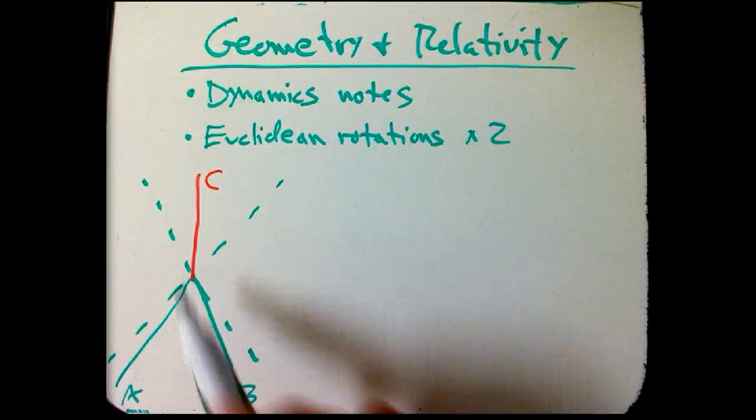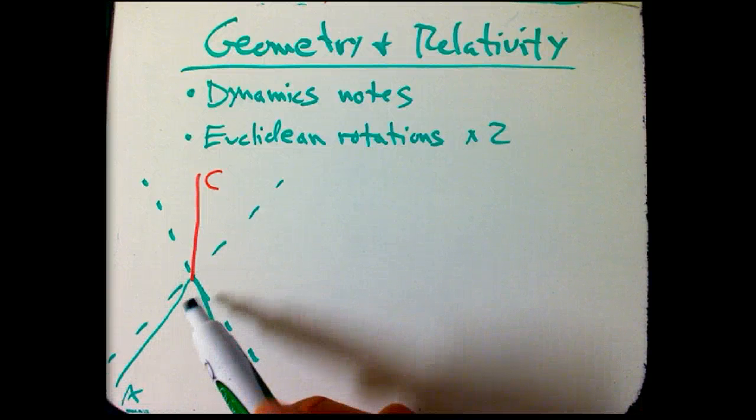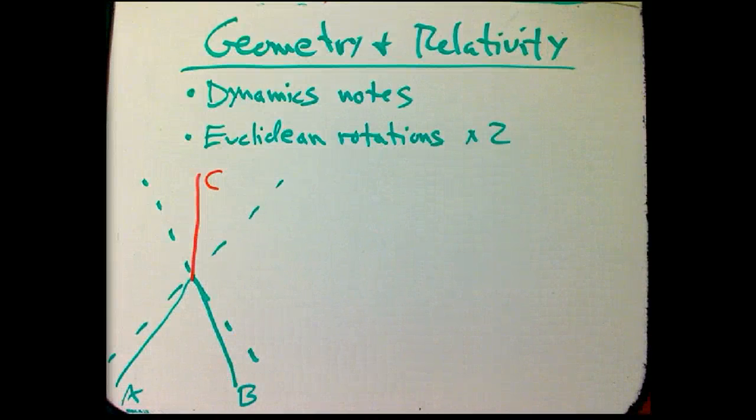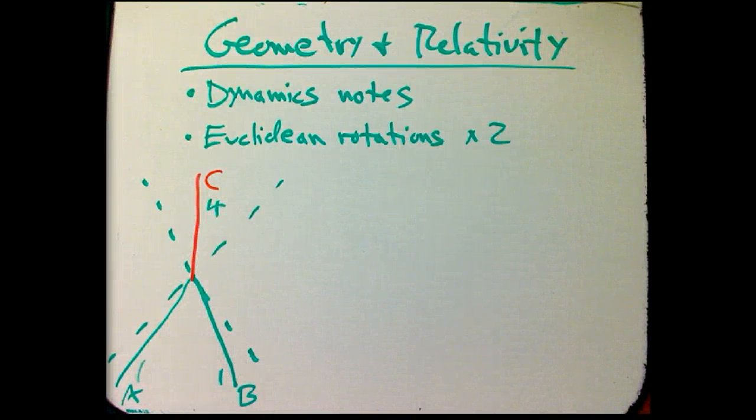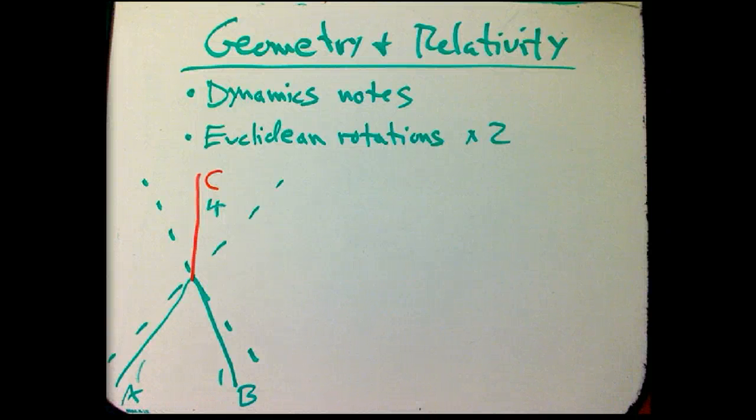Let's look one more time at this example of two objects coming together and sticking together to form a third object, and we had the one kilogram, one kilogram, ended up with a four kilogram mass. And that was, of course, because they had tremendous relative velocity.